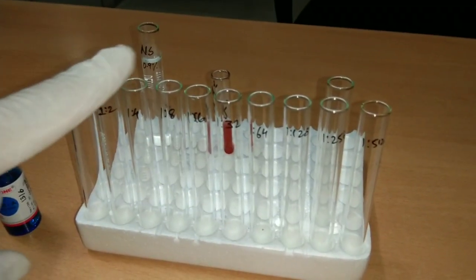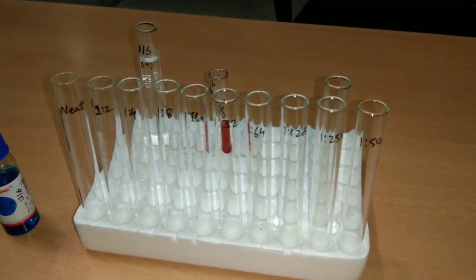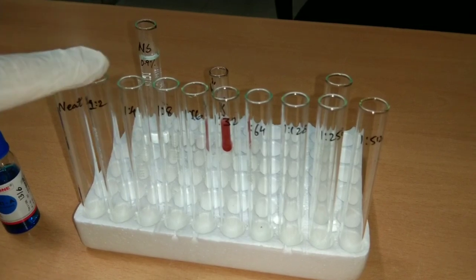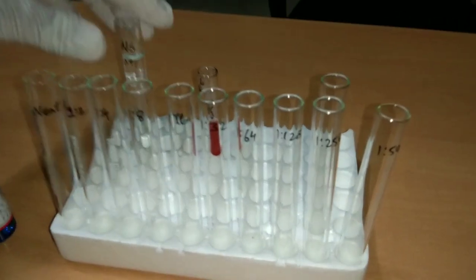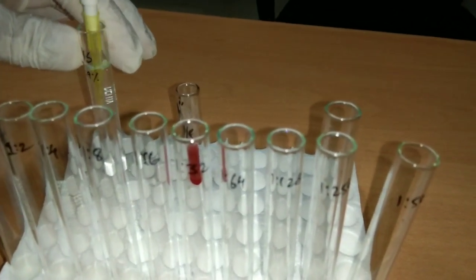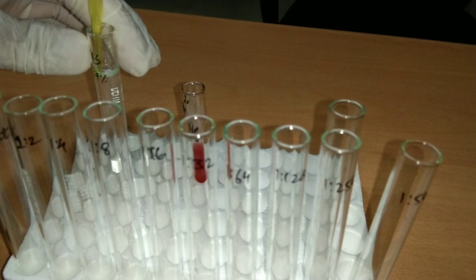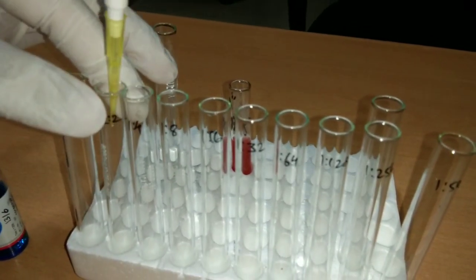Label a row of test tubes according to serum dilution, that is 1:2 to 1:512, and add 0.1 ml (100 microliters) of normal saline to all tubes except the first tube.